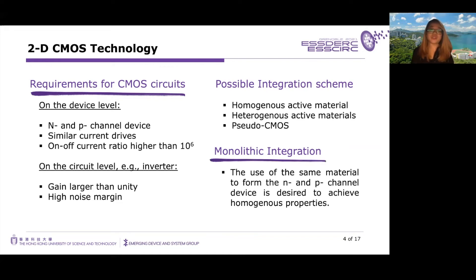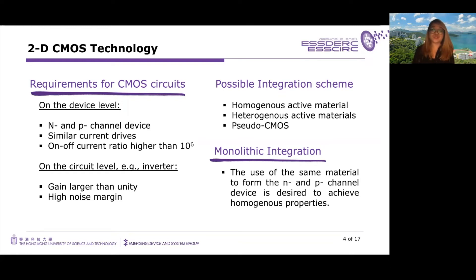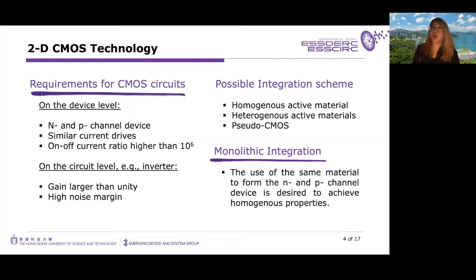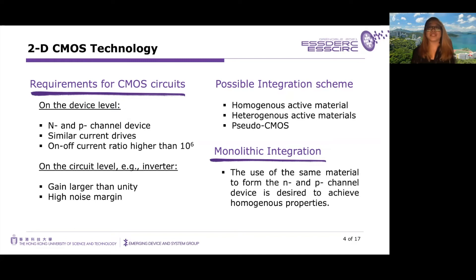There are different possible integration schemes for complementary devices — either using the same active material to form N and P active areas, heterogeneous materials, or pseudo-CMOS. But if we want to achieve homogenous material properties in terms of thermal expansion, mechanical flexibility, and so on, we need both N and P-channel devices formed using the same active material. In this work, we will be using MoS2 because of the properties discussed earlier.